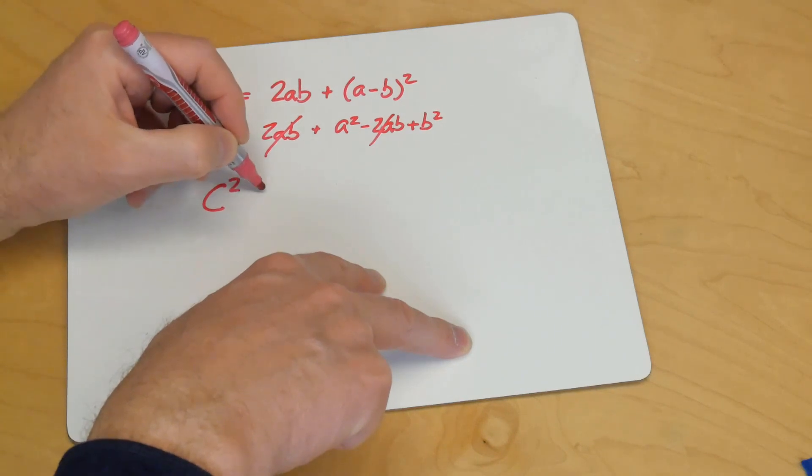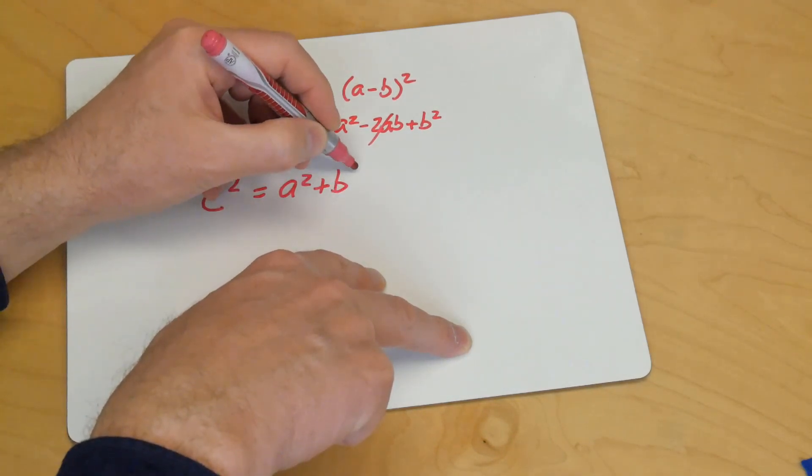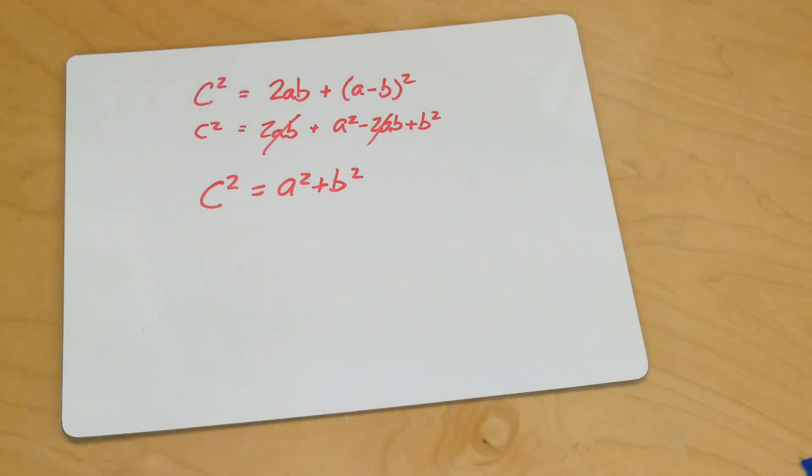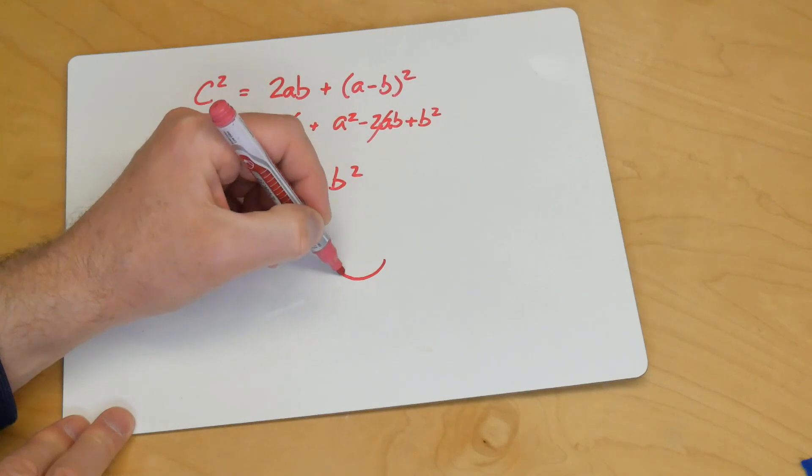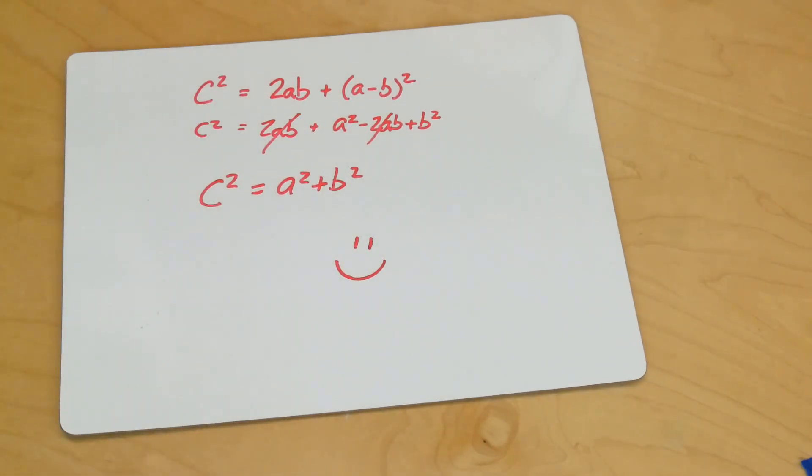So, what I get is c squared is a squared plus b squared. And that is the Pythagorean theorem. Not too bad, huh? Well, I hope this helps. And we'll talk to you next time.